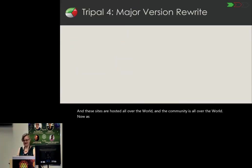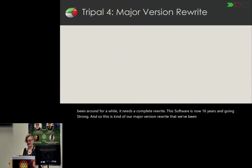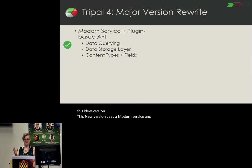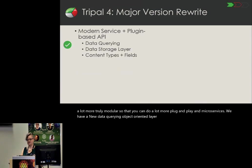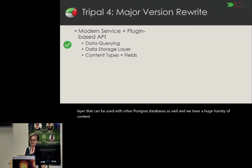As you've heard many times before about sustainability, oftentimes after software has been around for a while, it needs a complete rewrite. This software is now 16 years old and going strong, and this is our major version rewrite. It's still in process, but we're at a really good point where you can start actually installing this new version. It uses a modern service and plugin-based API that makes things a lot more truly modular for plug-and-play and microservices. We have a new data querying object-oriented layer for accessing Chado in an intuitive and performant way, and it's a generic layer that can be used with other Postgres databases as well.